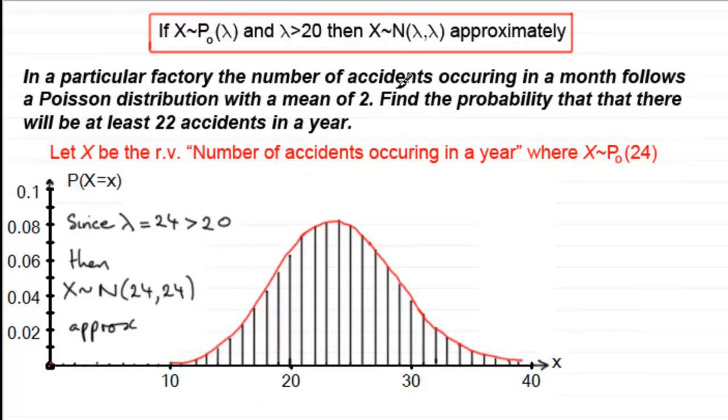Now we are asked to find the probability that there will be at least 22 accidents in a year. In other words, we've got to work out the probability that X is greater than or equal to 22. Now 22 on this scale will be here: there's 20, 21, 22. Normally we would just need to work out the area to the right of 22, and that area would give us the probability of being greater than 22.